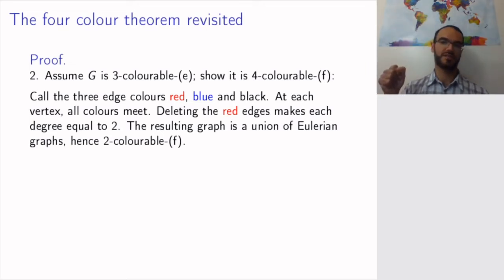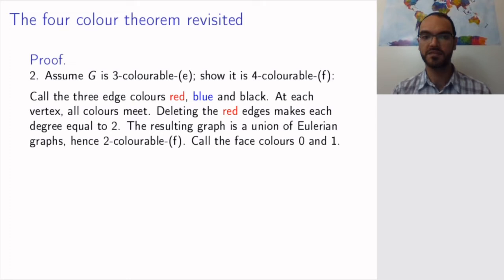So, after removing the red edges, the remaining graph will, of course, have some of the faces, so to speak, twice as big, because I've removed the red edges. So, it will be a two-face colorable graph. And I call these face colors 0 and 1. I will show you an illustration in a minute how this goes about.